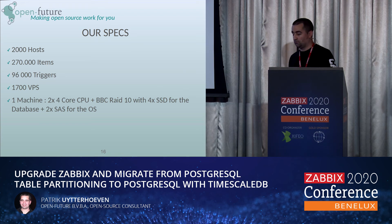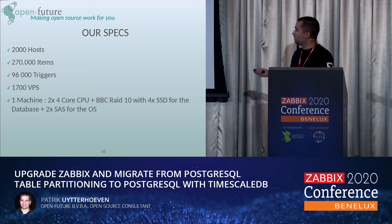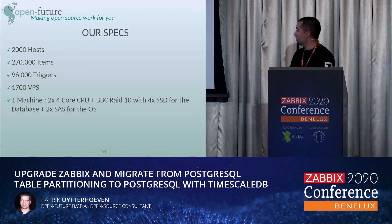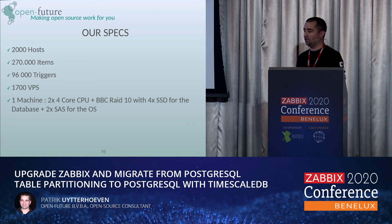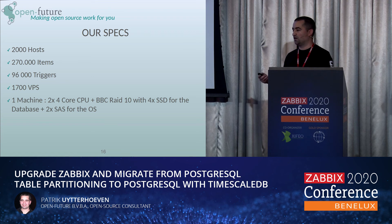Just to give you an idea of our specs: we are running about 2,000 hosts, 270,000 items, and about 96,000 triggers. The machine handles about 1,700 values per second, running on a simple machine with two CPUs and four SSD drives for the database. We didn't have any issues before, and with TimescaleDB we didn't notice any issues afterwards. The key benefit is we no longer need custom scripts, and we have official Zabbix support for our partitioning solution.